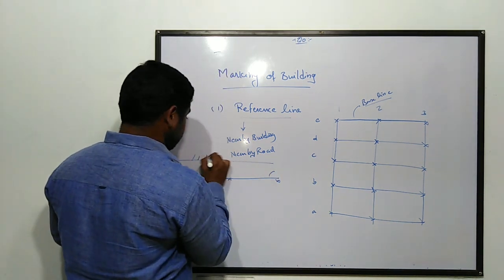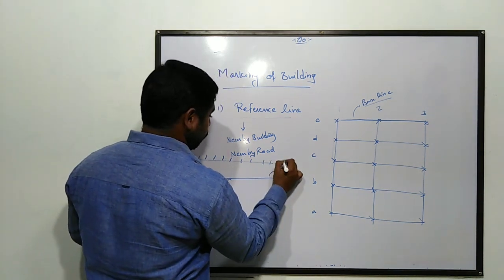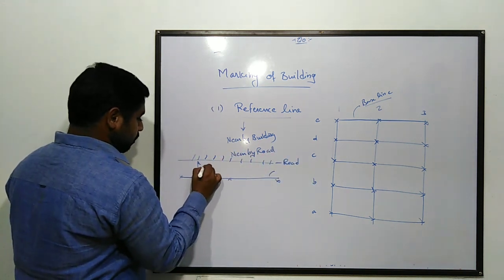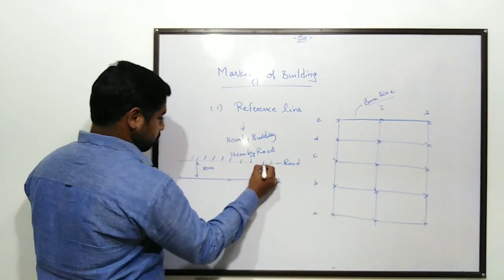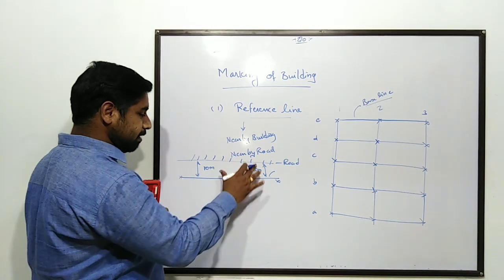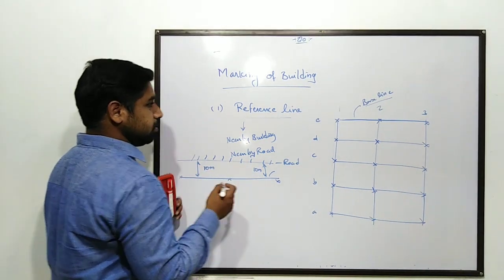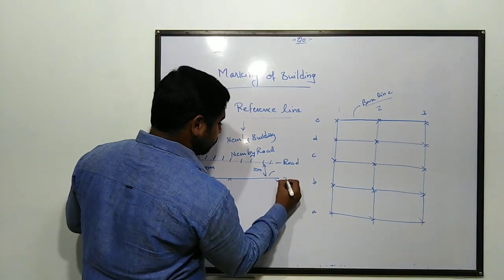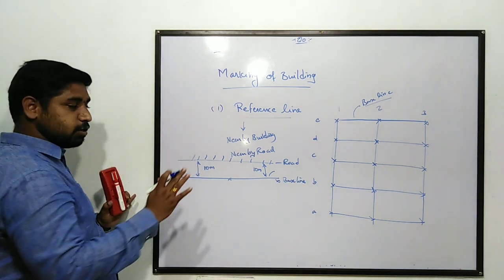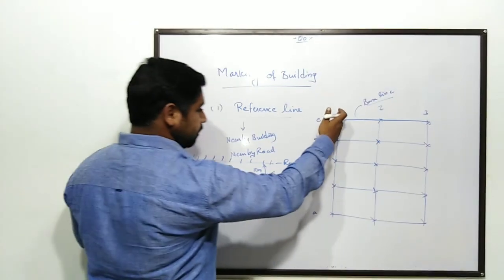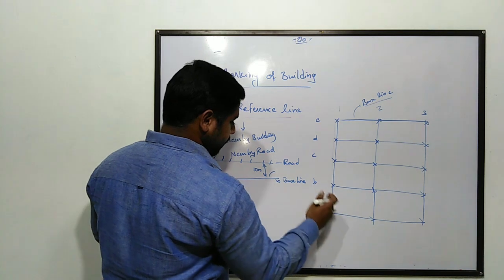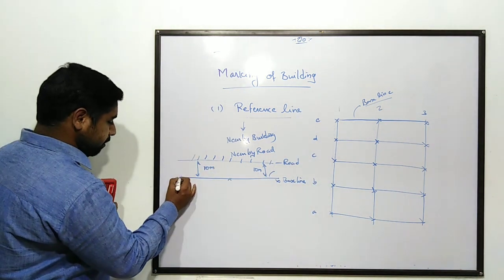For example, if there is a road, this is the road. If we take 10 meters distance from the road, we can establish our base line at 10 meters. Once this is our base line, we can plot points along it: E1, D1, C1, B1, A1. So we can plot all the points along the line to generate the base line on the ground.